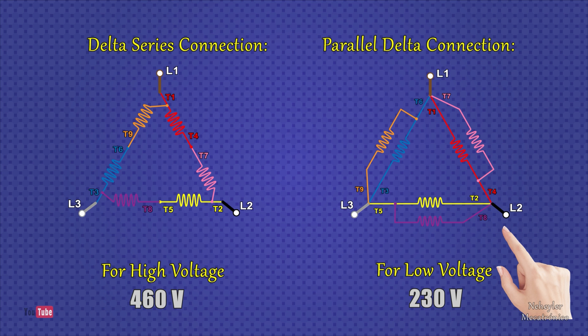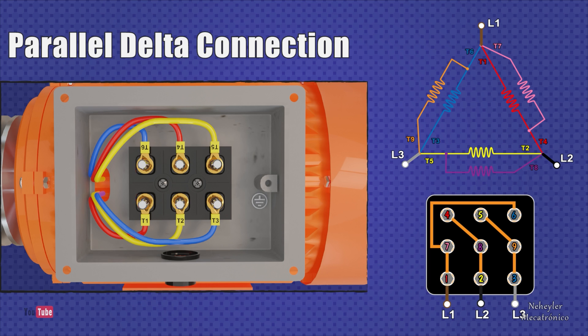Now let's look at the parallel delta connection type. In this case, there is a slight change in the position of the terminals from 1 to 6. In front of Terminal 1 is Terminal 6, in front of Terminal 2 is Terminal 4, and in front of Terminal 3 is Terminal 5. It has been arranged in such an order so that it is possible to use metal plates.